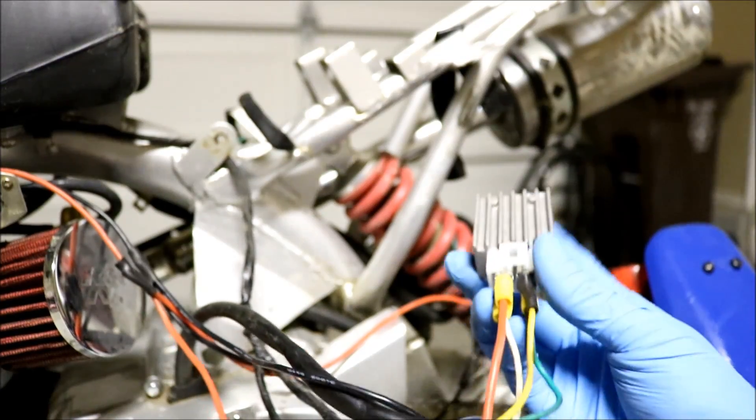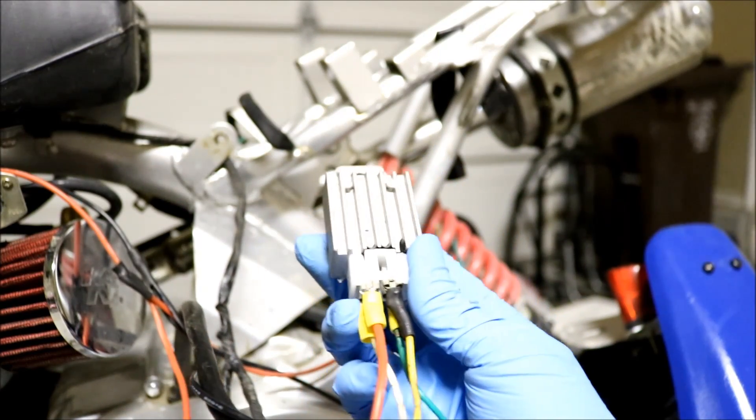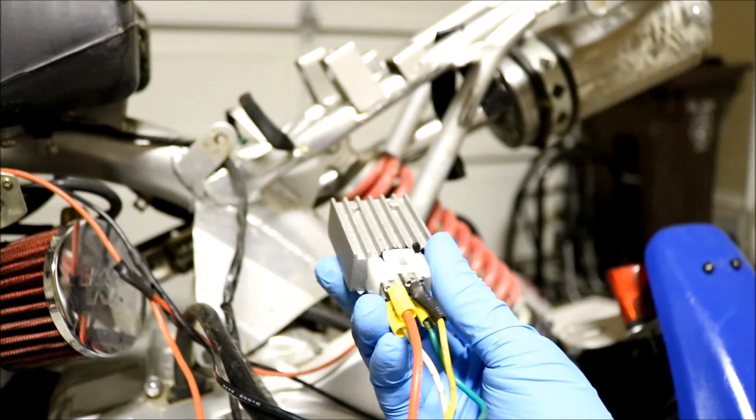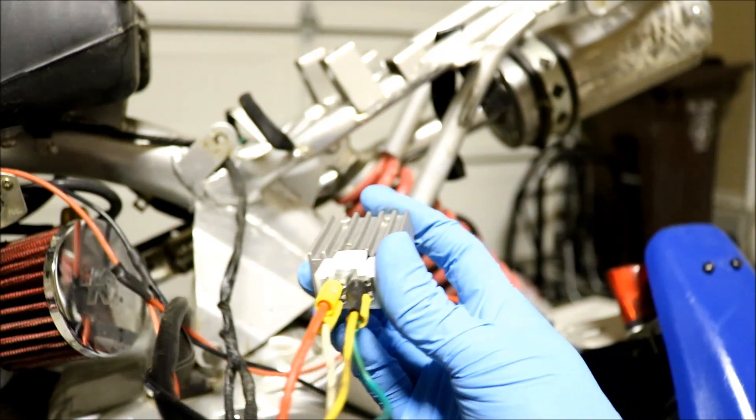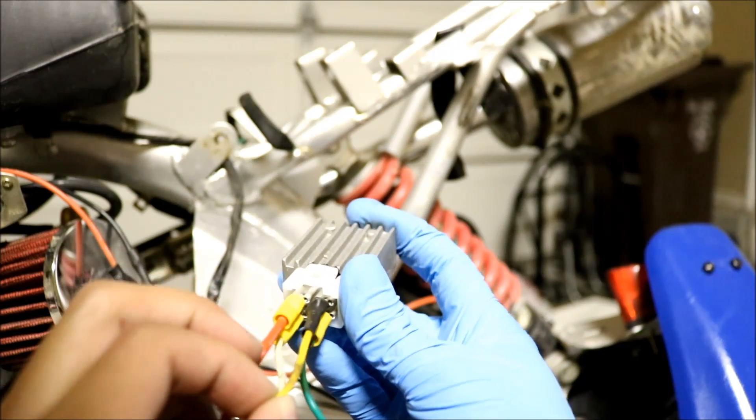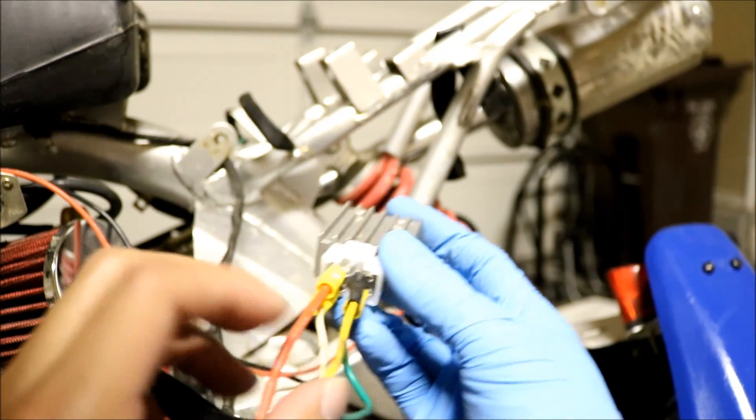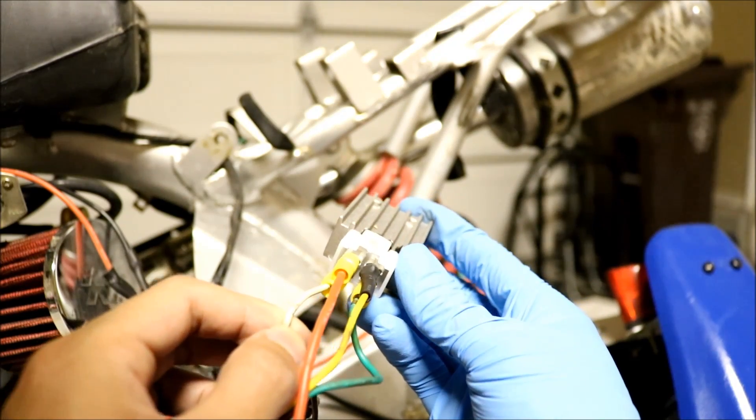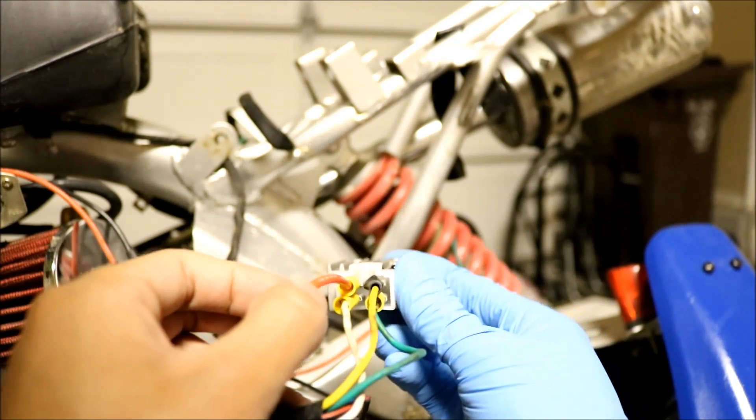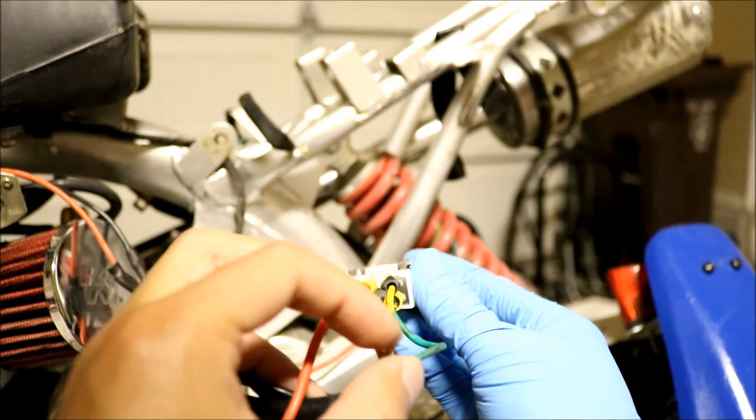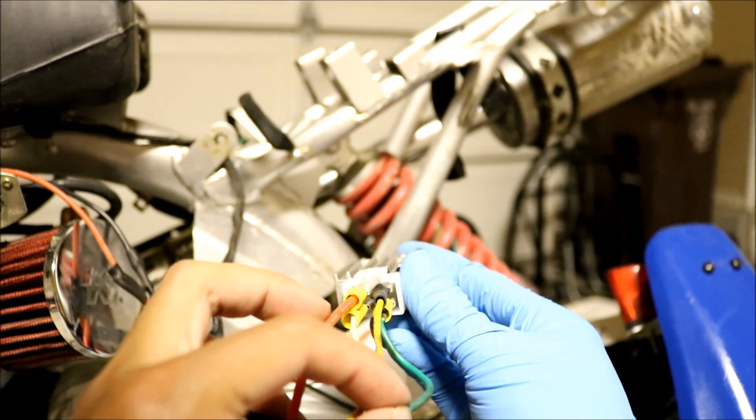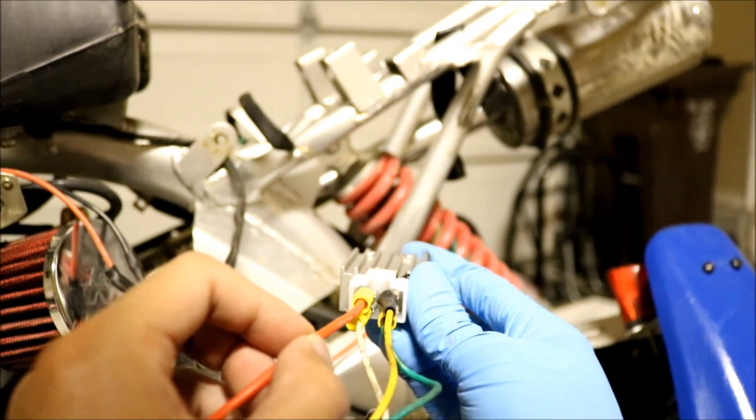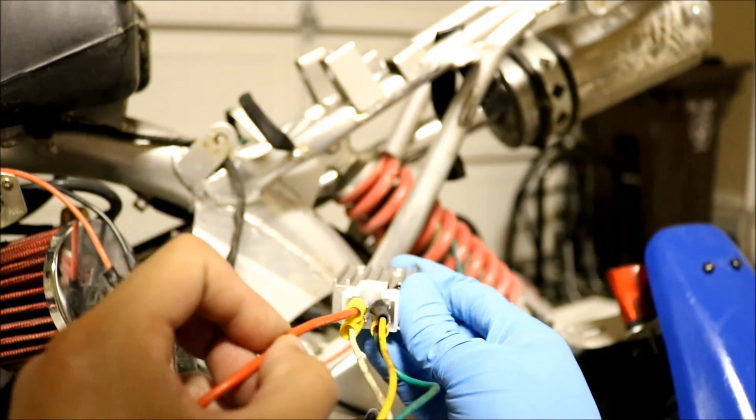So finally getting to the rectifier regulator. You can find this online anywhere from ten to fifteen dollars. I got it on eBay. And so from the stator, the yellow wire again, it's connected to the top right. And also from the stator is the white wire connected to the bottom left. And the red wire is the top left and the ground is bottom right. So the red wire goes to whatever you're powering, so charging your battery or powering your headlight or taillight.